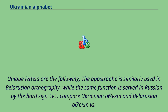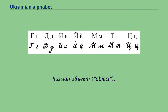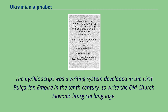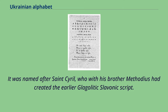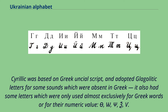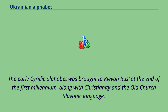The Cyrillic script was a writing system developed in the First Bulgarian Empire in the 10th century to write the Old Church Slavonic liturgical language. It was named after Saint Cyril, who with his brother Methodius had created the earlier Glagolitic Slavonic script. Cyrillic was based on Greek uncial script and adopted Glagolitic letters for sounds absent in Greek. It also had letters used almost exclusively for Greek words or for their numeric value.